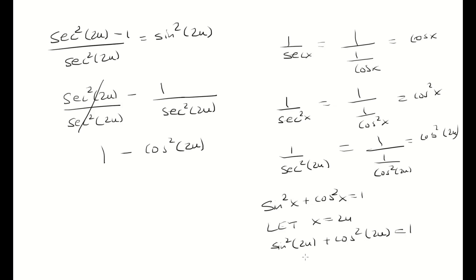Subtracting both sides by cosine squared 2u, I get sine squared 2u is equal to 1 minus cosine squared 2u. So, notice this is what I have: 1 minus cosine squared 2u, and that is equal to sine squared 2u. And so, that verifies the identity.